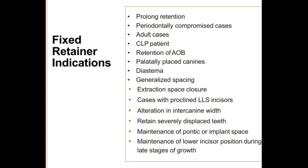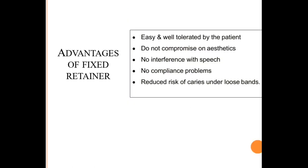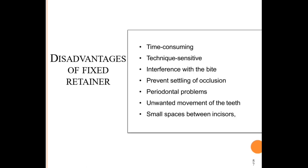Fixed retainer indications include cases requiring prolonged retention, predominantly compromised and adult cases, diastema, and generalized spacing. Advantages include ease of use, good patient tolerance, no aesthetic compromise, no speech interference, and reduced risk of caries under loose bands. Disadvantages include being time-consuming and technique-sensitive, potential interference with the bite, possible prevention of occlusal settling, risk of unwanted tooth movement, and small spaces between incisors can appear.